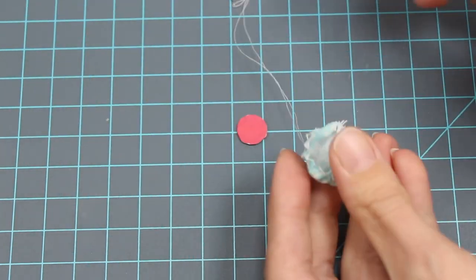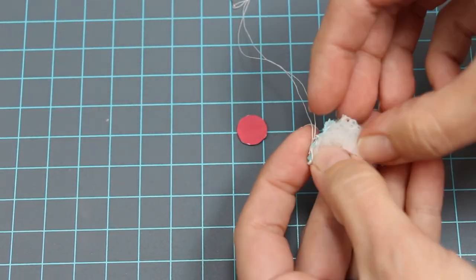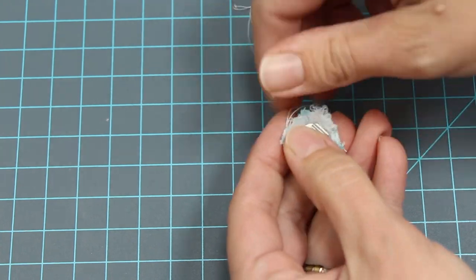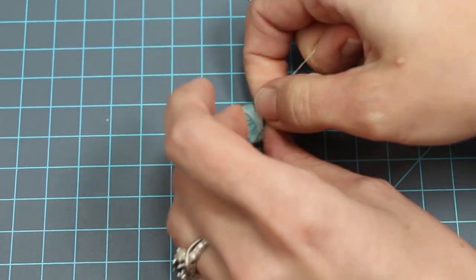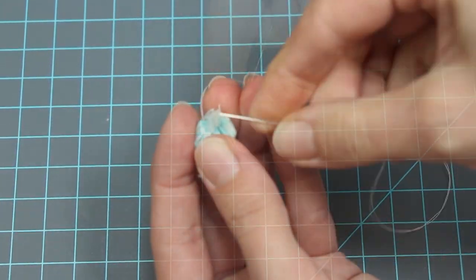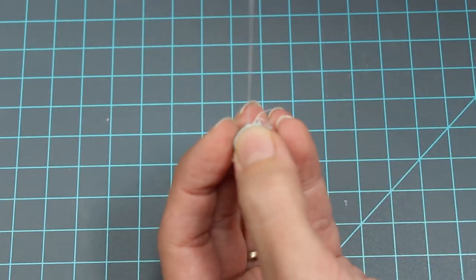Cut it out. Use a needle and thread to sew around the edge. Put a small bit of fluff and your small circle, and pull your stitches tight.